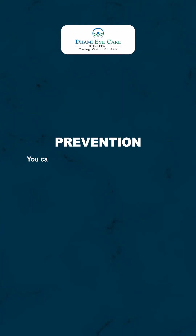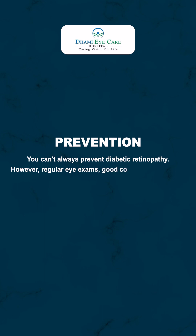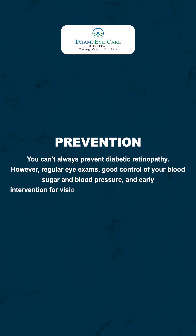You can't always prevent diabetic retinopathy. However, regular eye exams, good control of your blood sugar and blood pressure, and early intervention for vision problems can help prevent severe vision loss.